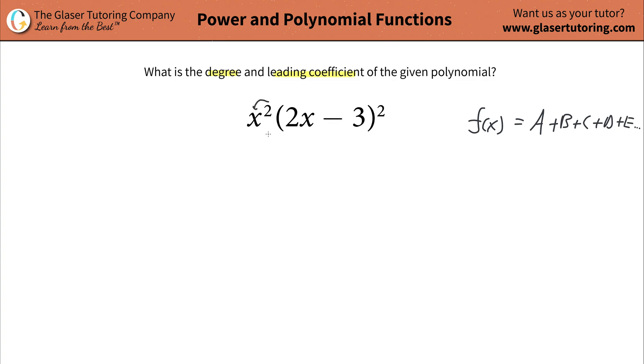The exponent here on x, there's nothing you can do with it. It's just x squared. But there is something you can do with this term that is being squared. So watch what I'm going to do. I'm going to write this out twice. So there's going to be 2x minus 3 times 2x minus 3, right? Because that's what it basically means to be squared.